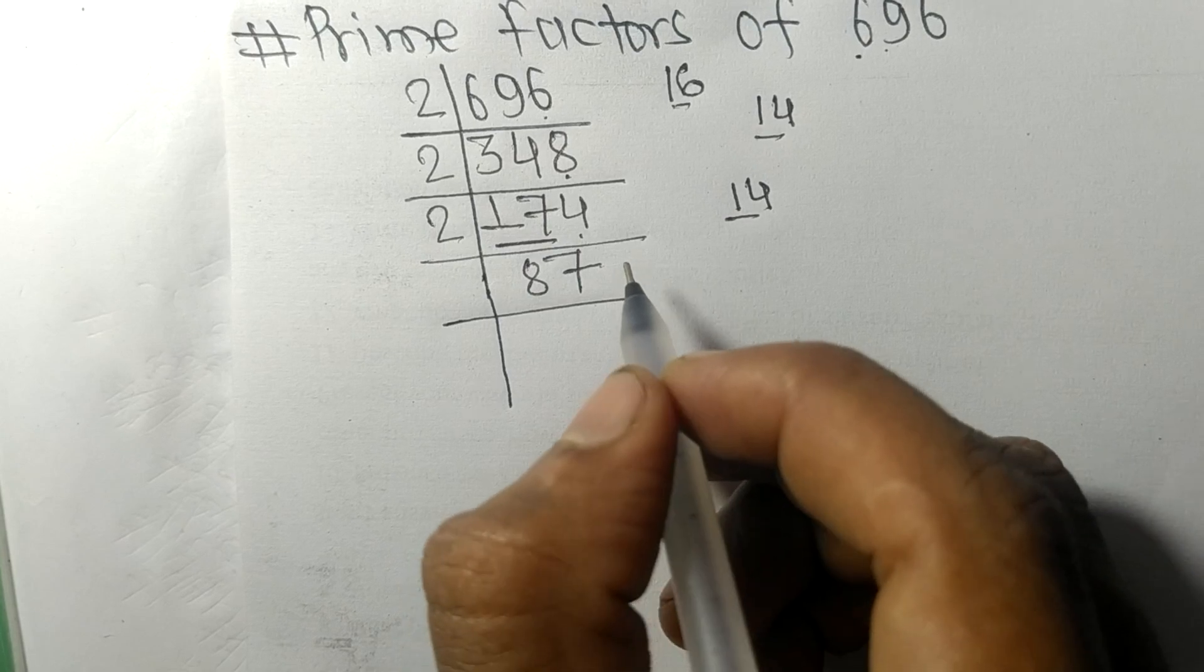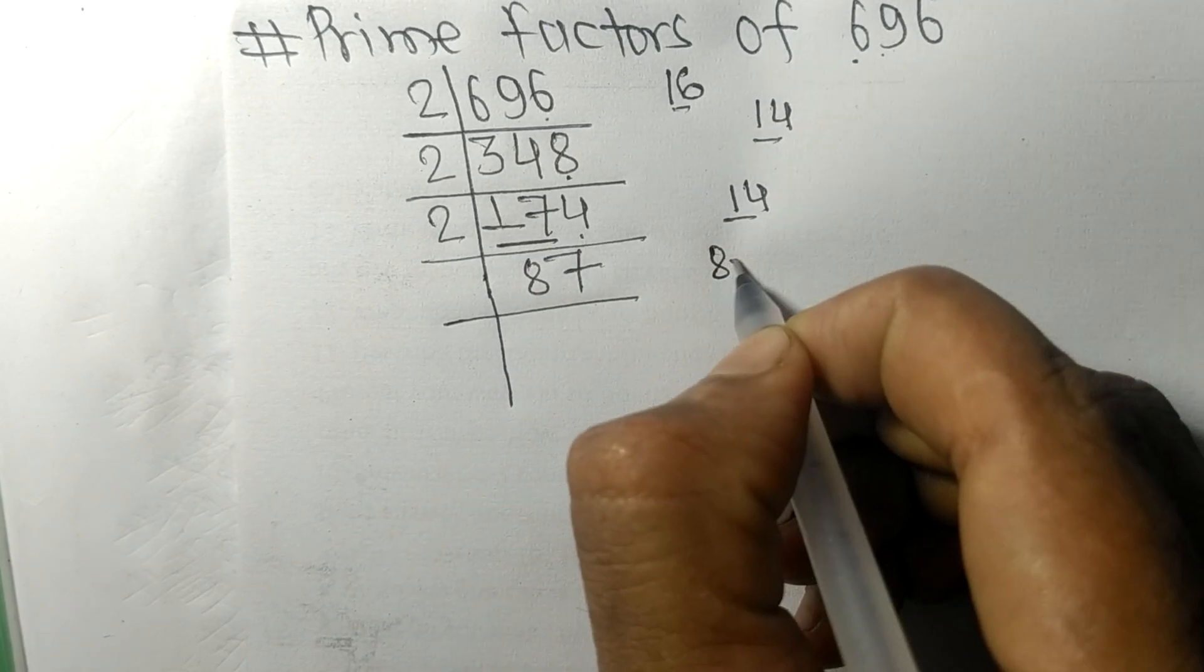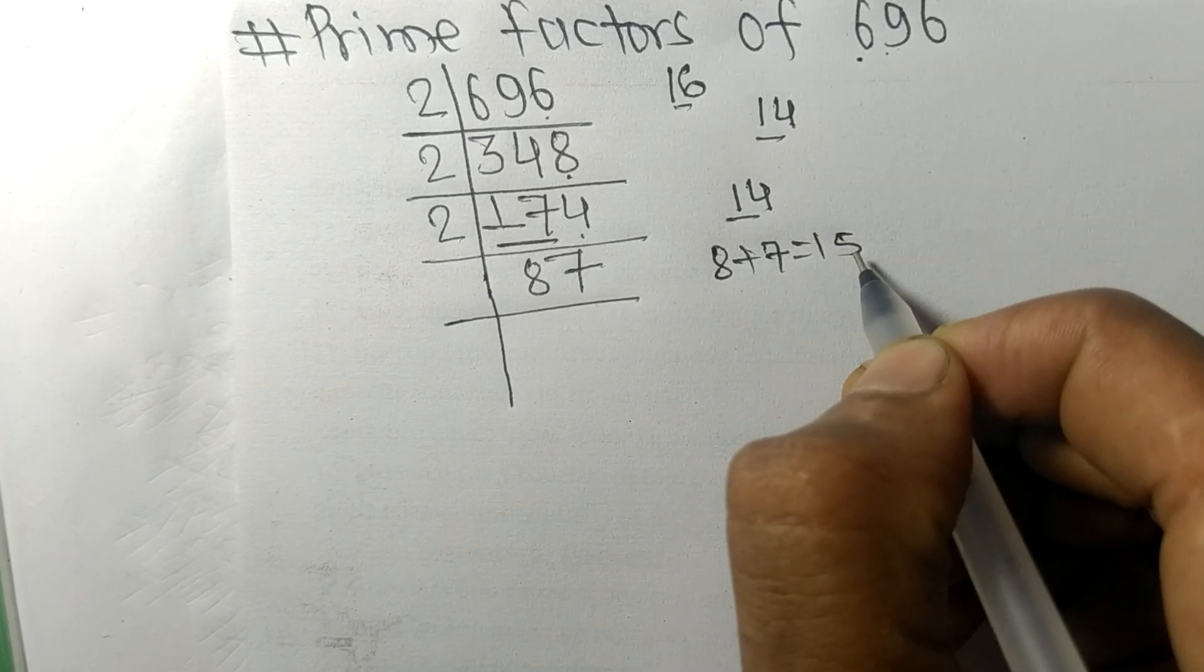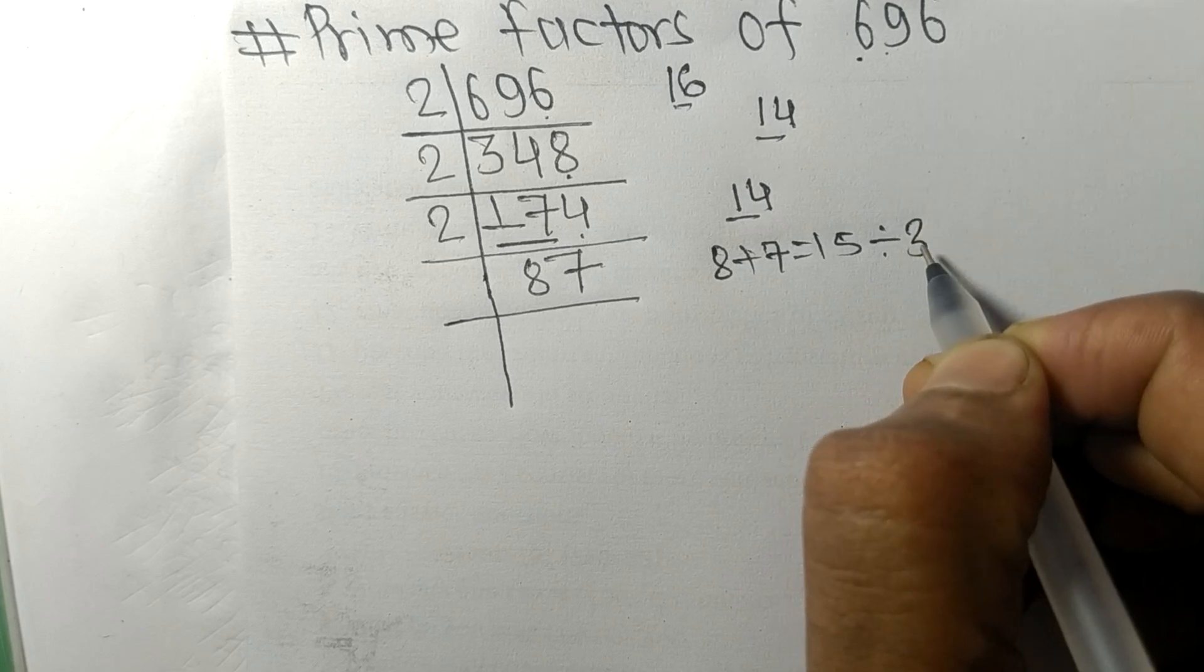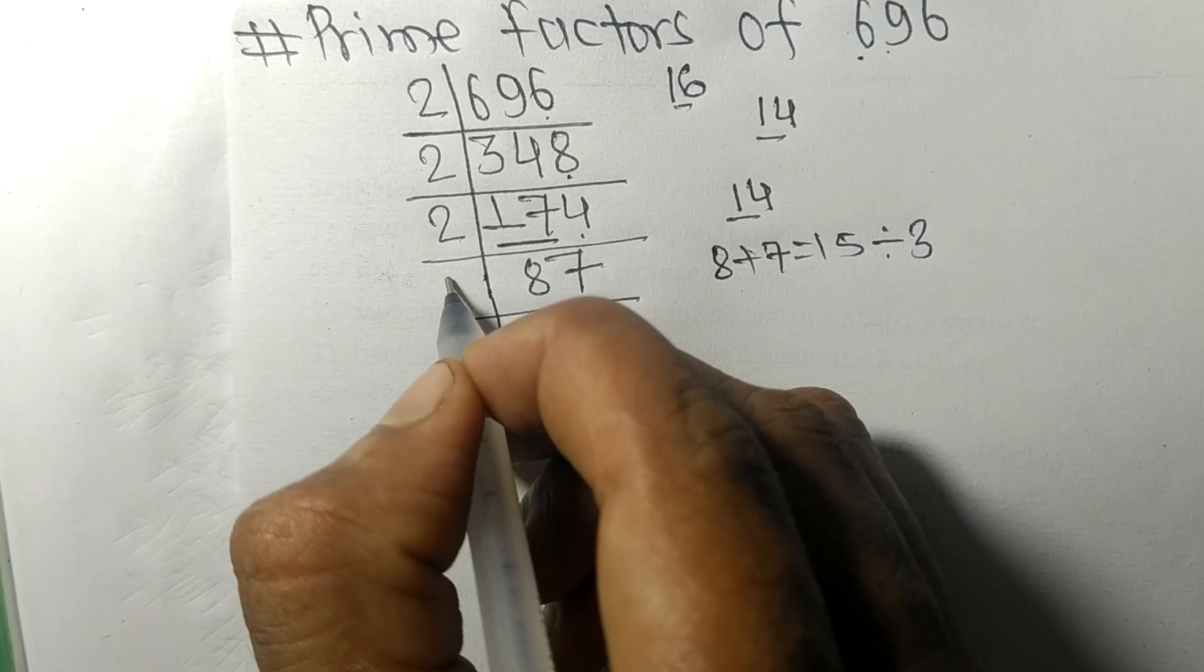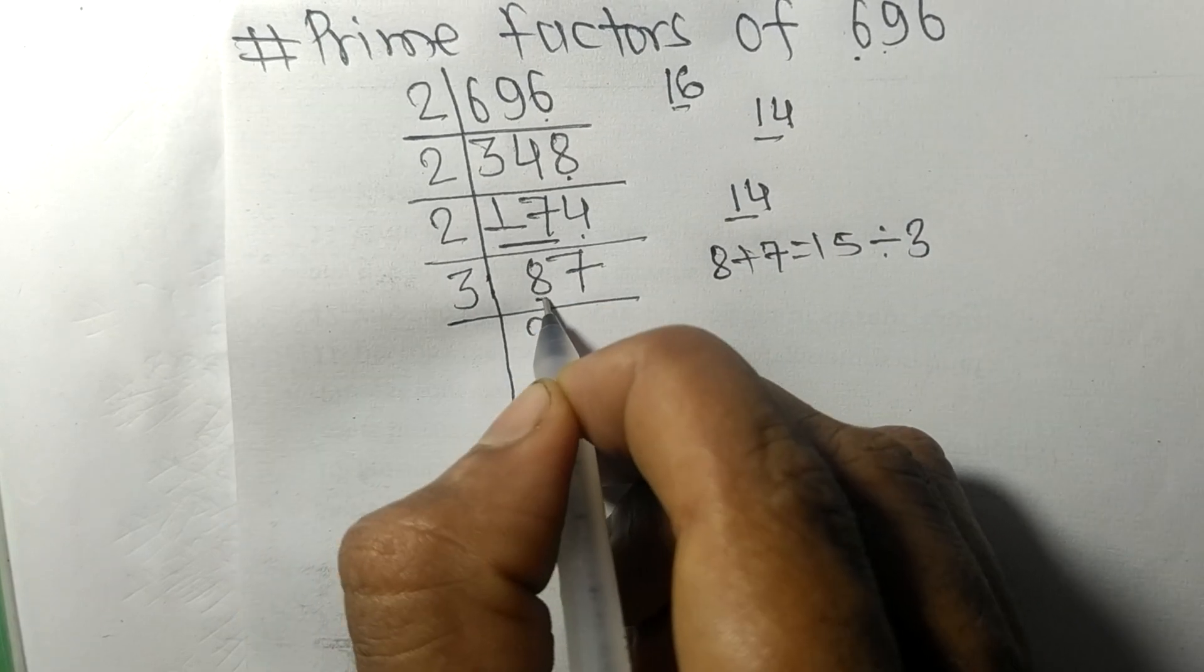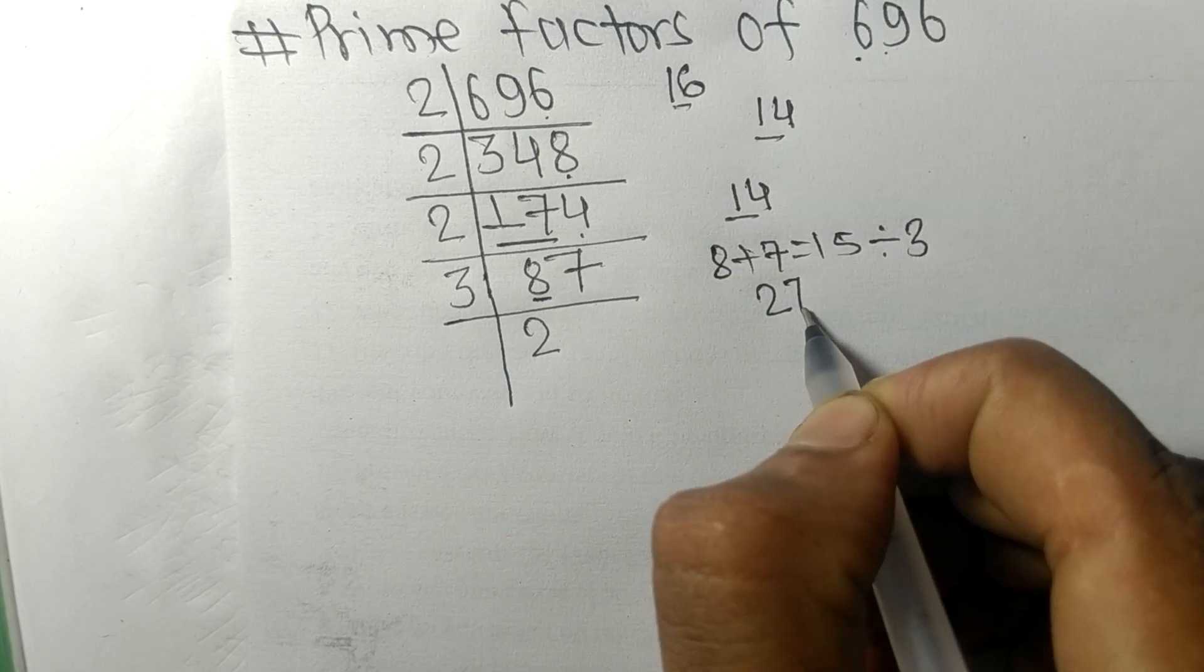When we add all these numbers, that is 8 plus 7, then we get 15, and 15 is exactly divisible by 3, so 87 is also divisible by 3. 3 times 2 equals 6 remainder 2 and 7, 27, 3 times 9 equals 27.